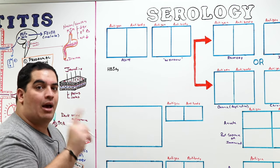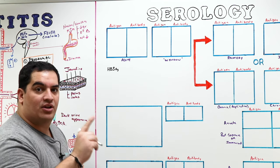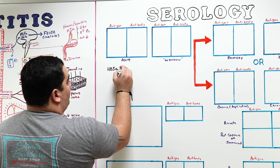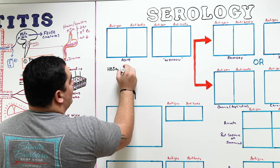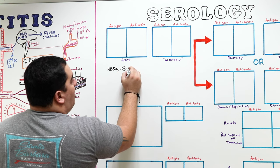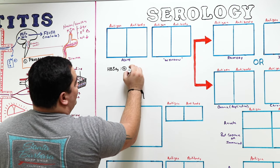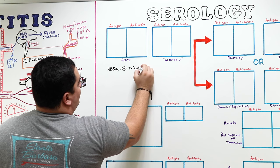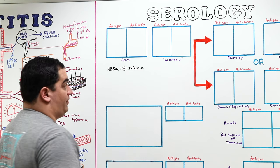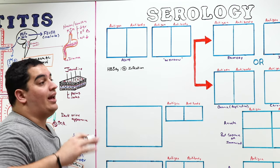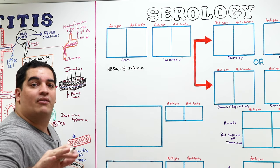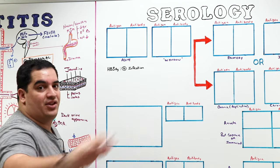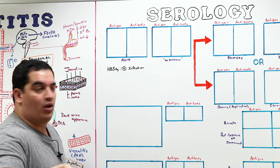The only thing I want you to know about the hepatitis B virus surface antigen is that if it is positive, that means the patient is infected. It could be an acute infection or a chronic infection. All we know is that if it is positive, the patient is infected with hepatitis B.